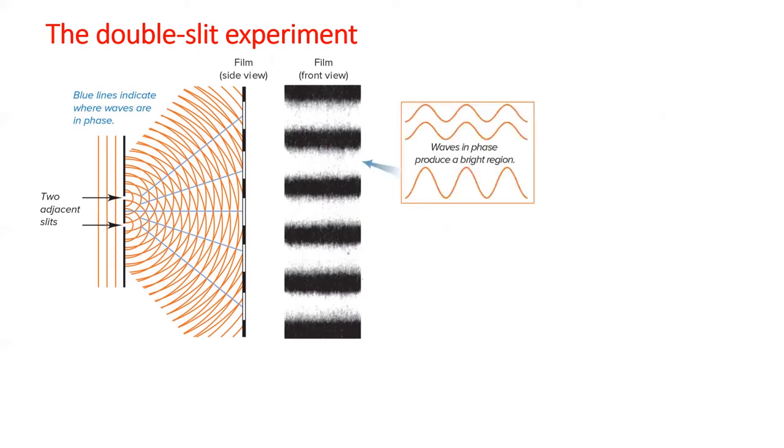The bright spots come from places where the wiggles from both slits are in sync, or in phase. It's like when your turn signal lines up perfectly with that of the car in front of you. These waves have a peak at the same time and a trough at the same time, meaning they add together to make a spot twice as bright as either one alone.